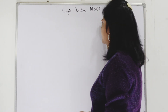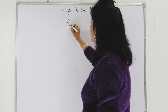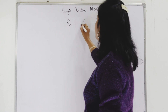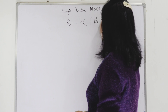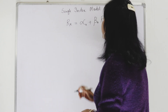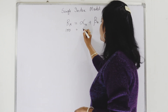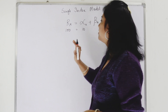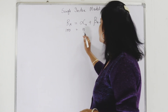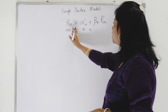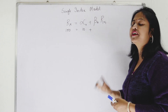What this model says is: if we have a security X, then the return of security X is equal to alpha of security X plus beta of security X times market returns. So if the security is earning, say, 100 rupees, then part of it — alpha — is a fixed return, such as dividends. The rest is influenced by market movements, that is, market returns, which could be any representative index.